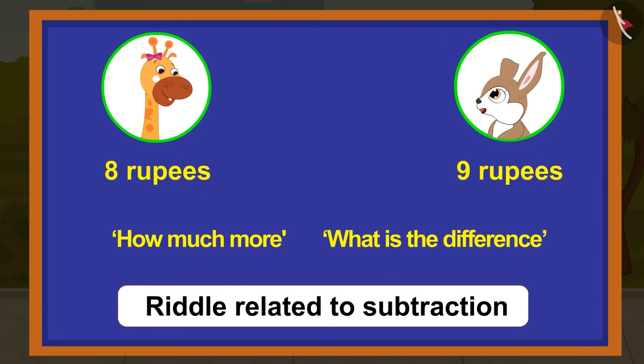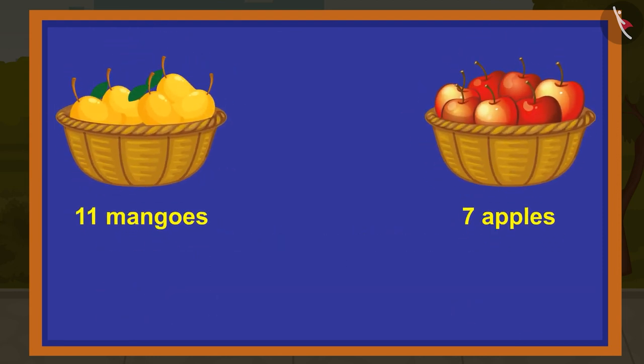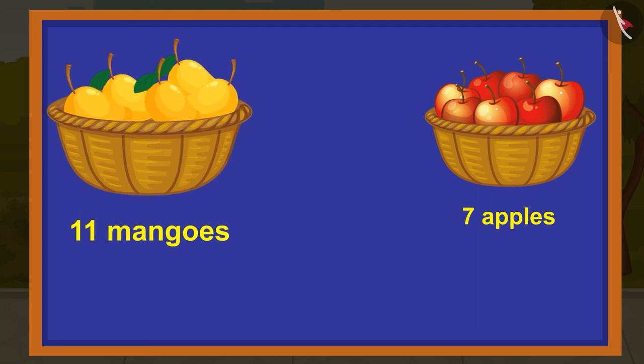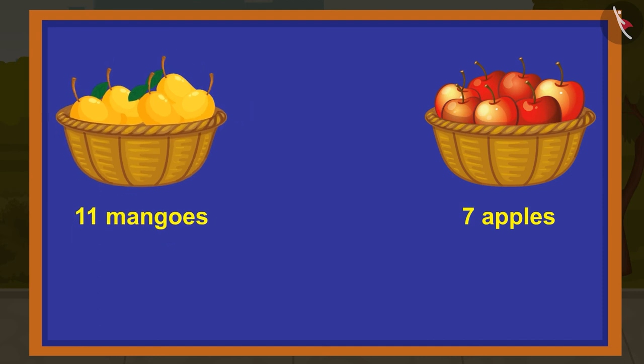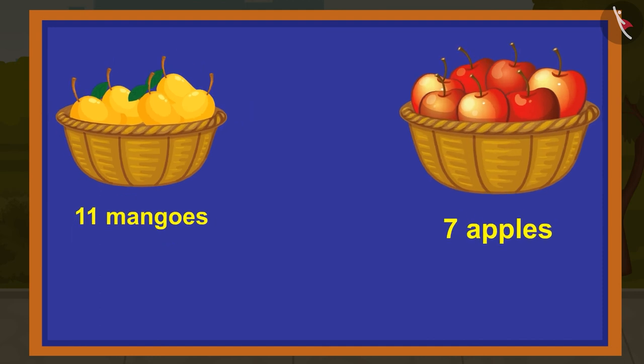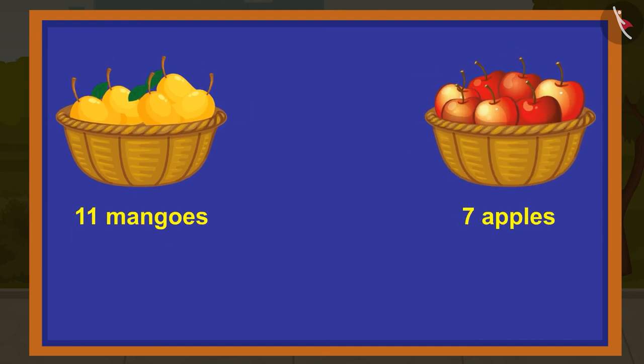Children, isn't it interesting? Now it's your turn to make one riddle each related to addition and subtraction from the question given on the screen: on a table, 11 mangoes are kept in one basket and 7 apples are kept in another basket. Share these riddles with your friends and family.